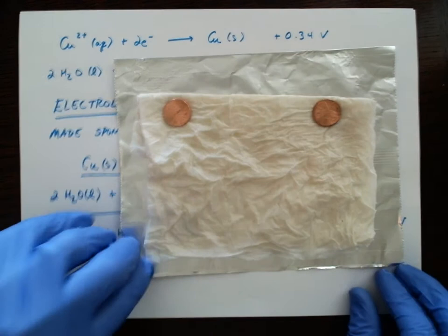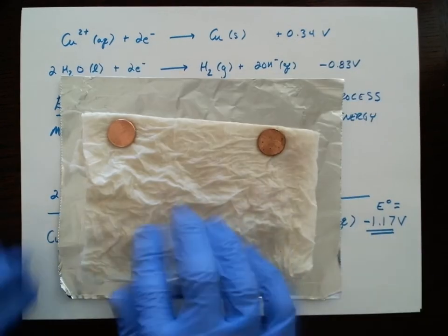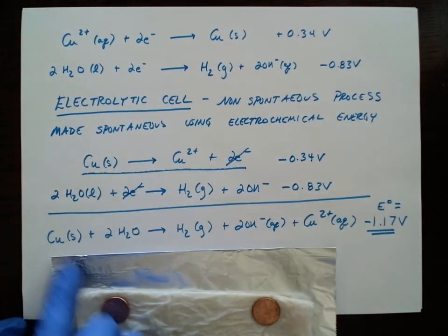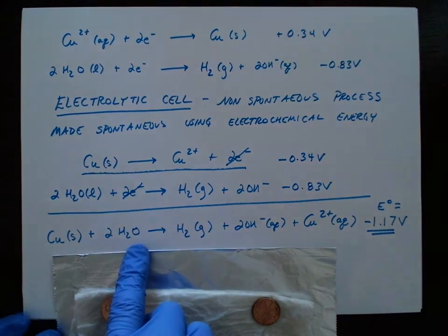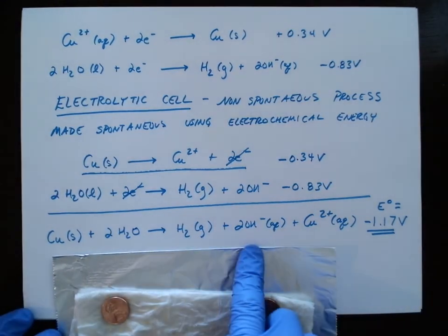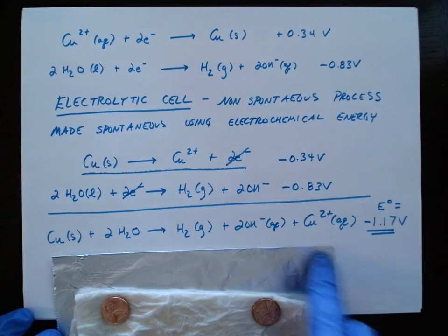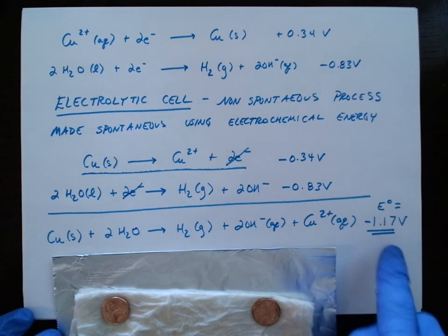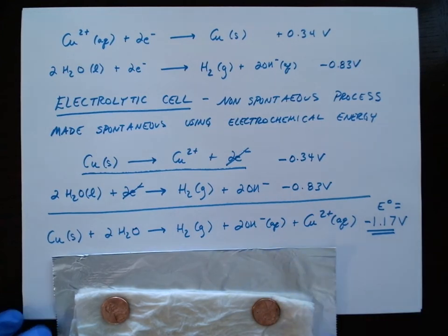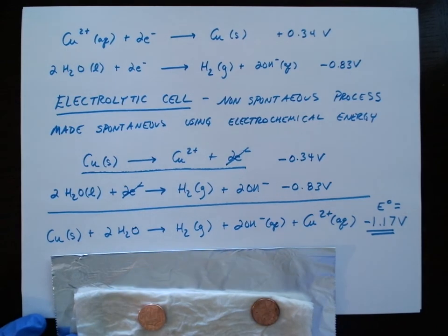And of course, that's expected. We just calculated that this process overall of taking solid copper, reacting with water, we're not getting any hydrogen gas, we're not getting any hydroxide ions, we're not getting any copper 2 because we've got a negative cell potential. So we're not going to expect to see any copper 2 formed.